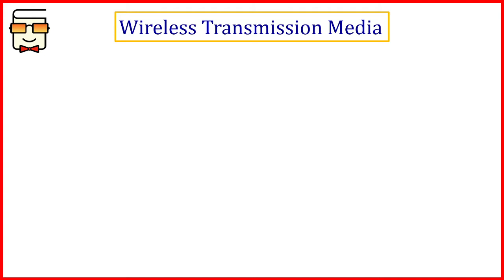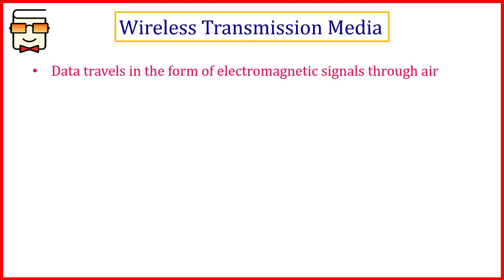Hello students, welcome back to my channel. In this video we will be studying about wireless transmission media. We covered the wired transmission media in the previous video, where we studied the twisted pair cable, coaxial cable, and fiber optic cable. Now we will study about wireless transmission media. In the introductory video of guided and unguided transmission, I told you that in unguided or wireless transmission, data travels in the form of electromagnetic signals, which can either be microwaves, infrared waves, or radio waves.